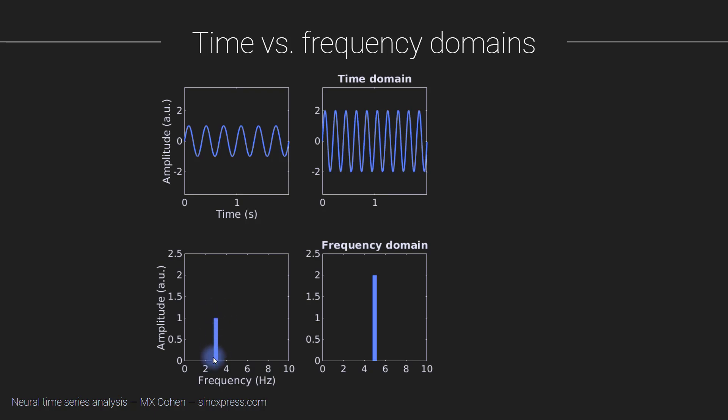So we have three cycles appearing in a time span of one second, which corresponds to three Hertz. Then we get a bar here at three Hertz, and the height of this bar is one. That corresponds to one half of the distance between the troughs and the peaks.